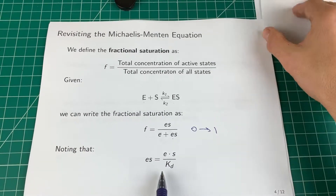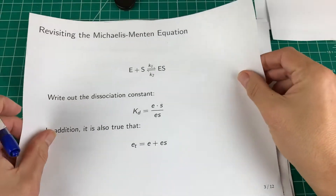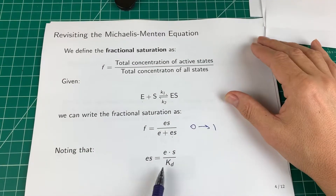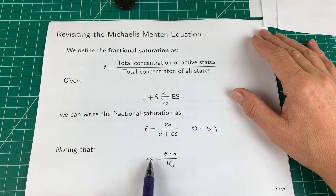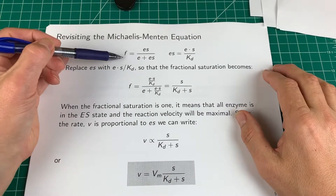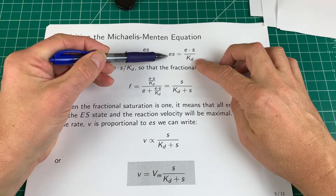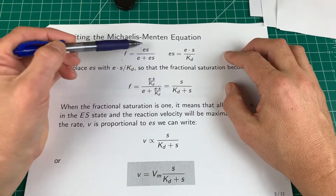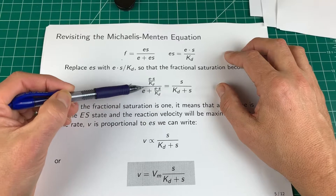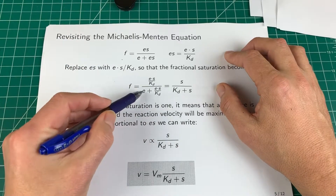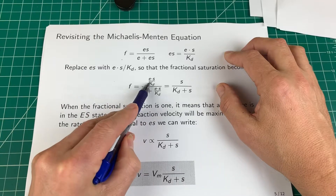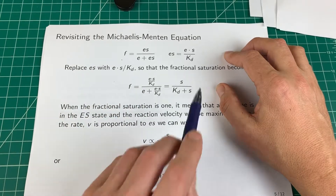Now recall that the dissociation constant KD is this ratio. I'll rearrange this so I get ES on its own. What I'm going to do now is substitute — whenever I find ES, I'm going to substitute in this expression. So that's what I do here. This is the fractional saturation again, and this is the relationship with the dissociation constant. Every time I see an ES I'll swap in this expression and I end up with a different form for the fractional saturation involving the dissociation constant. I can cancel the free enzyme, then multiply top and bottom by KD — that cancels the KD terms and I end up with this relation.